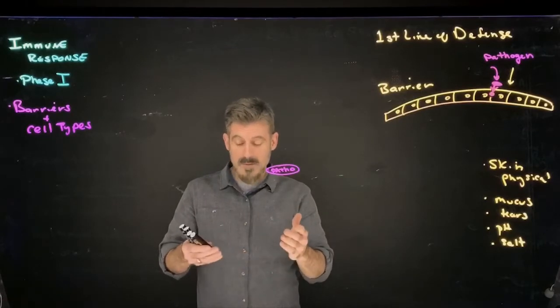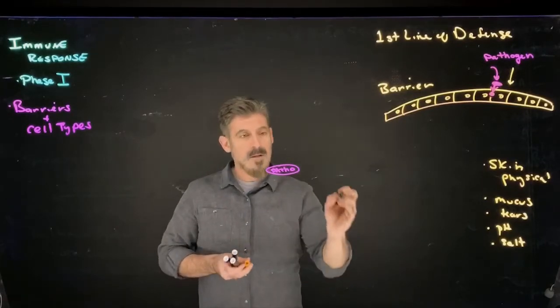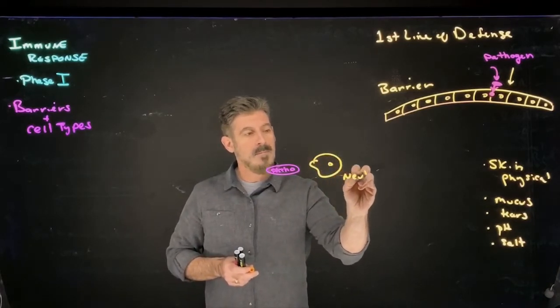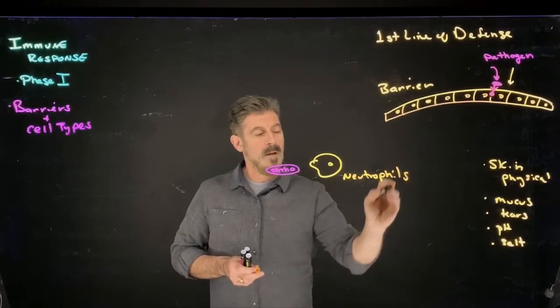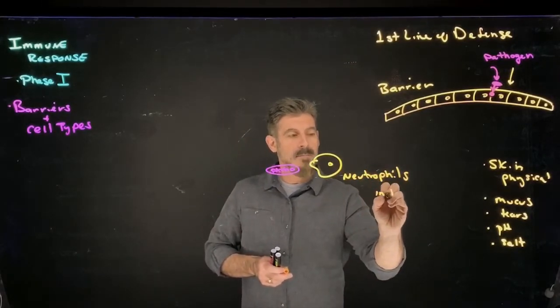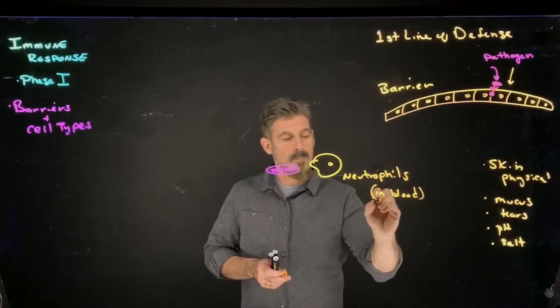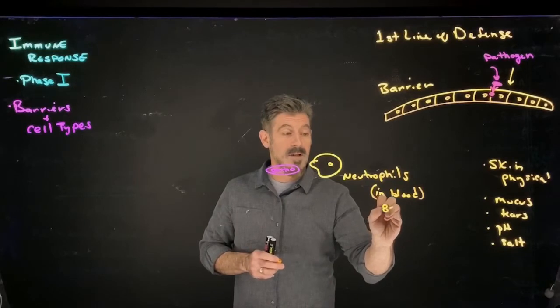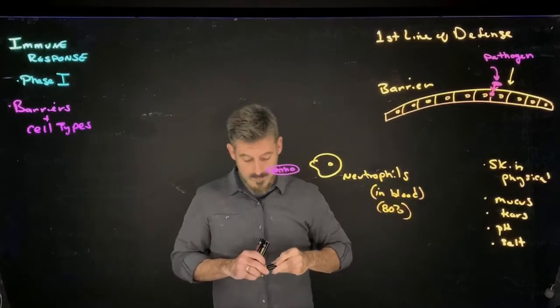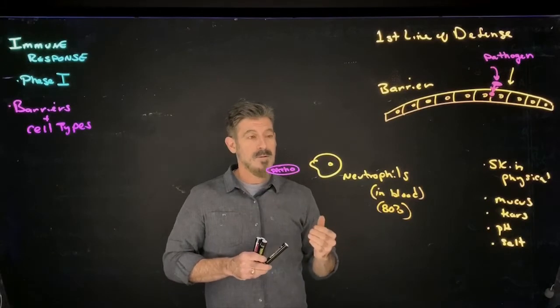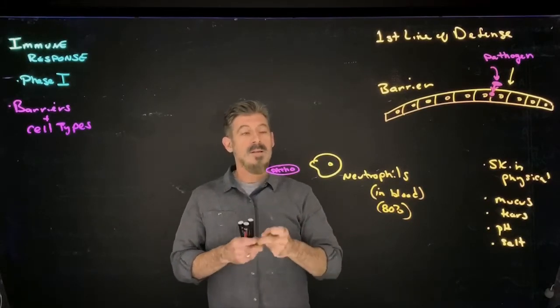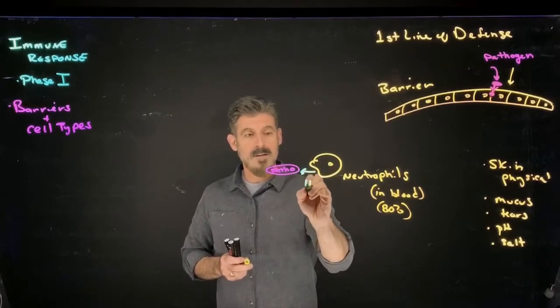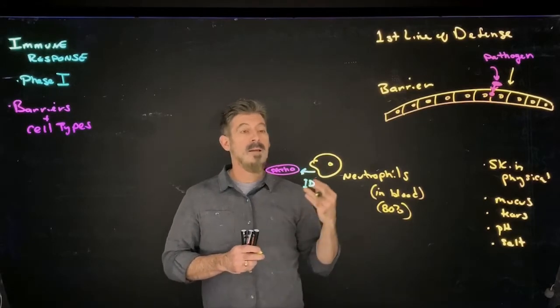We're going to have a few things that can happen here, depending on the particular tissue and what type of cell may first encounter it. Cells called neutrophils are very abundant in your blood and they make up a huge portion of the cells in your blood, as much as sometimes about 80 percent of the cells in your blood are these neutrophils.